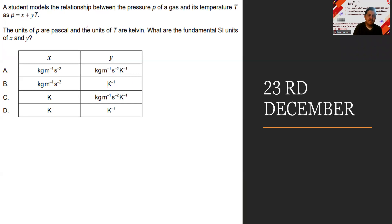A student models the relationship between pressure p of a gas and its temperature t given by p equal to x plus yt. Units of p are Pascal and units of t are Kelvin. What are the fundamental SI units of x and y? I would like to give a small clue here saying that you are going to use dimensional analysis to understand this question. It tells you whatever units you have on the left hand side, the same unit should exist on the right hand side.